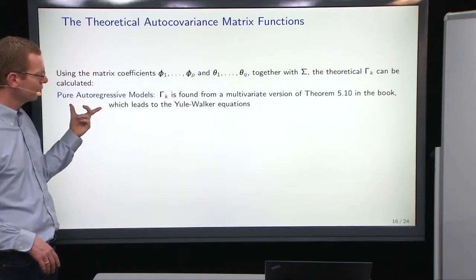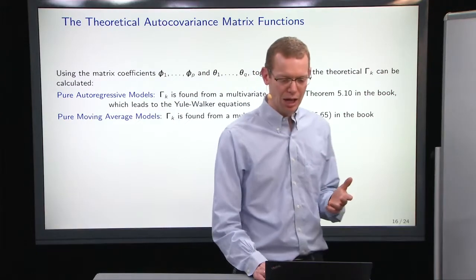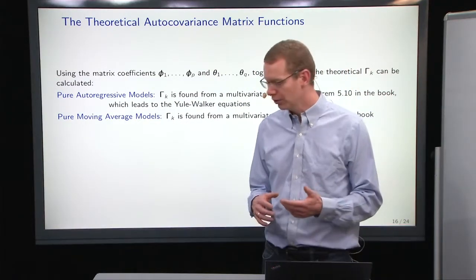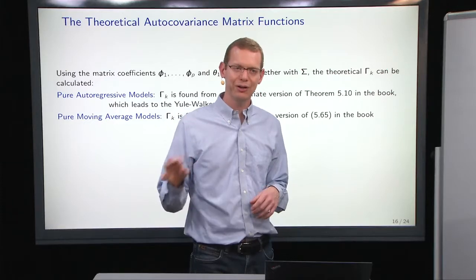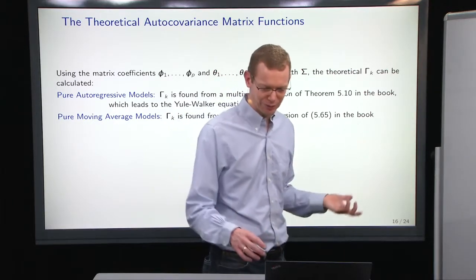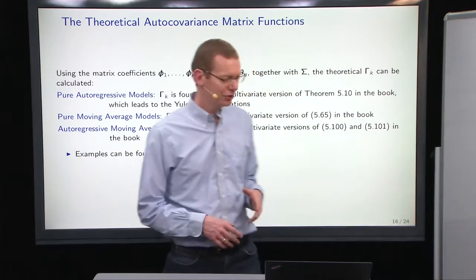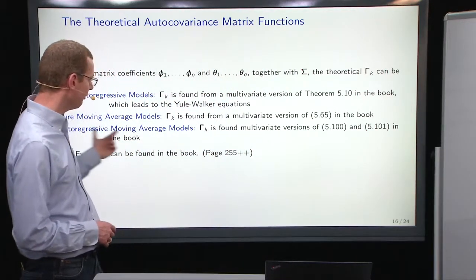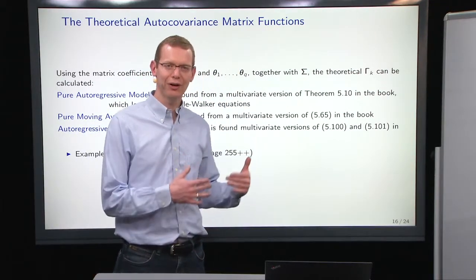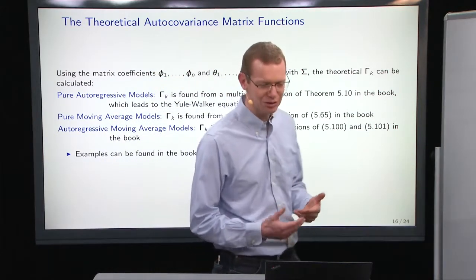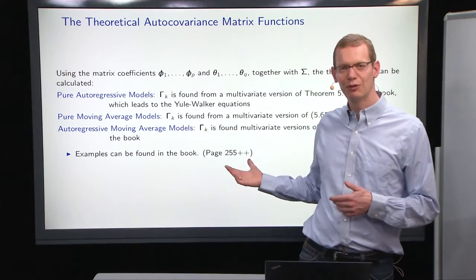If we have a pure autoregressive model, then we can use a multivariate version of the Yule-Walker equations. I'll get back to that in a moment. And if you have a pure moving average model, well, then you take equation 565 from the book, and then you pretty much take all the univariate elements there, treat it all as matrices, keep track of what should be transposed and what not. The similar thing applies to the combined autoregressive moving average models. It's just different equation numbers, but you can do the analog to what you did in the univariate case to get to equations and solutions in the multivariate case. And you can also find examples in the book on page 255 and the following pages.